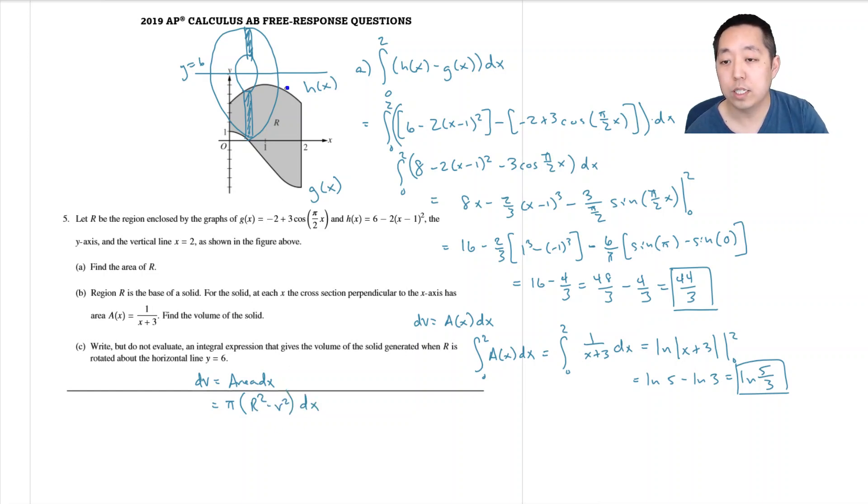Big r is the distance from here all the way down to the bottom of my rectangle. Okay, so it's always top minus bottom when you want to do this distance. The top is 6. The bottom, in this case, would be g of x. So big r is equal to 6 minus g of x.